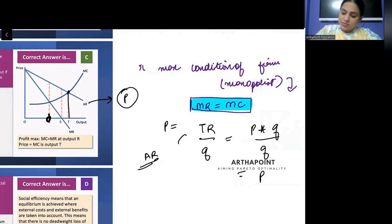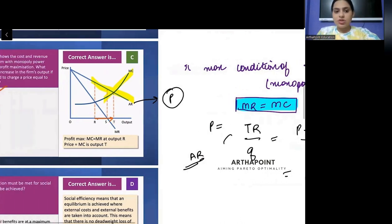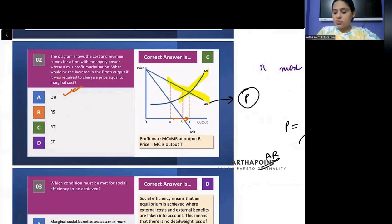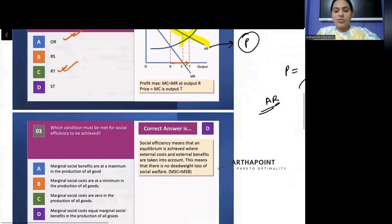So price equal to MC where is it happening here? This is MC. This is price. They are getting equal at T. So what is the increase when you go from this to this? RT. So what will be the answer to this question? RT.